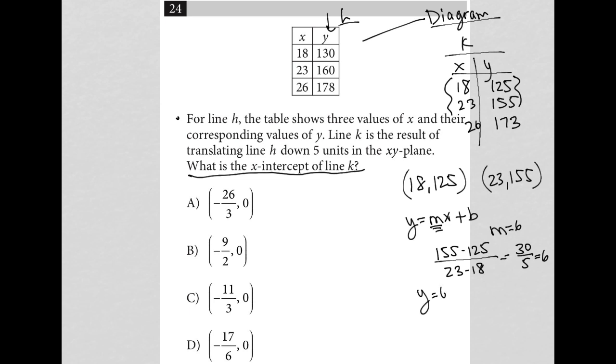And therefore I have Y equals 6X plus B. I'm going to then take another ordered pair, let's take the 23, 155 again, and plug those, plug the X value and the Y value into my equation in order to solve for B.